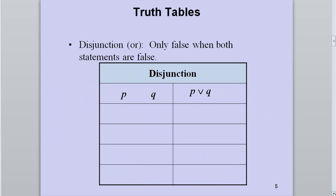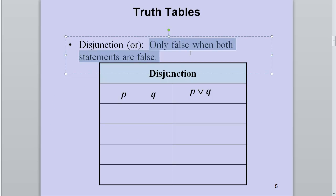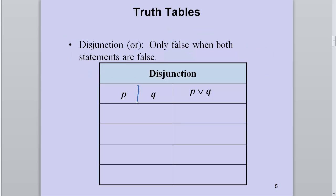The disjunction is only false when both statements are false — as long as you have one true, you're good. Again, I'll start with that same structure: true, true, false, false for p, and true, false, true, false for q.